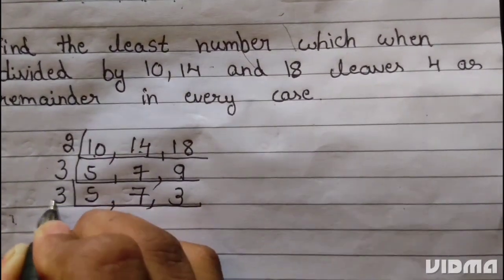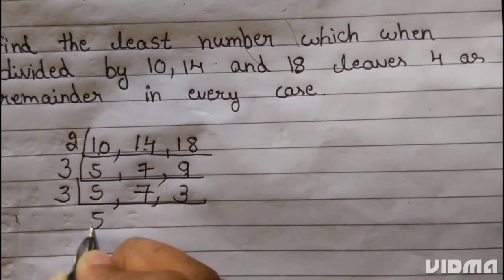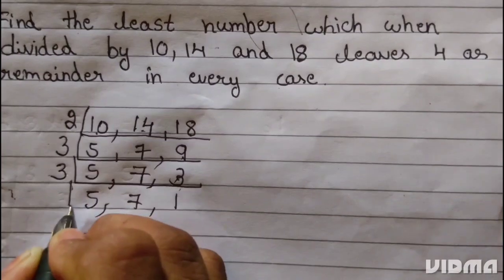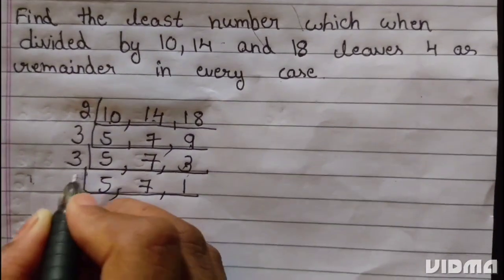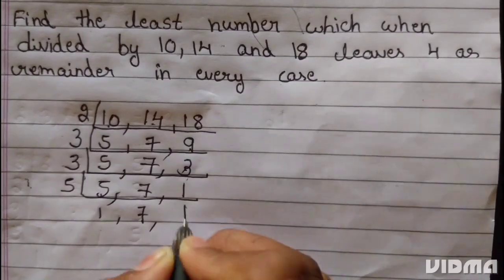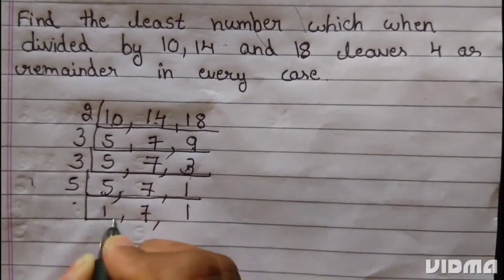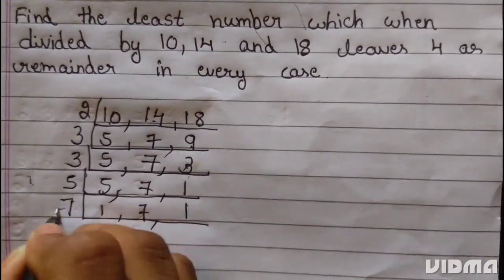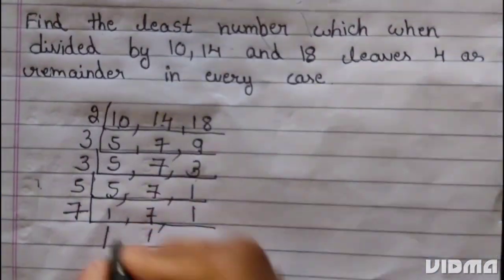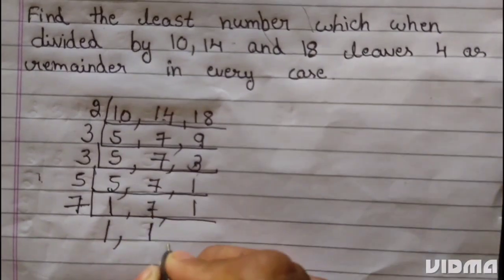5 divides into 5 gives 1. 7 divides into 7 gives 1.